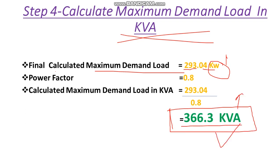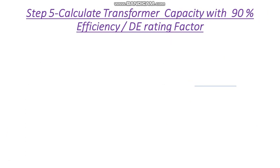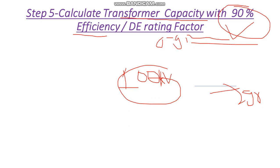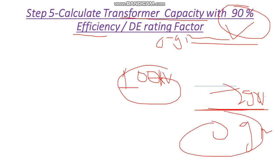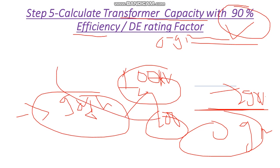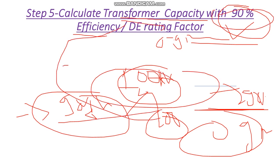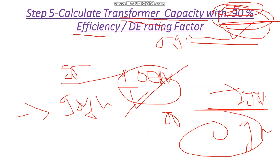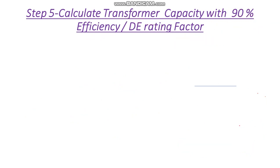In Step 5 we calculate the transformer capacity with 90% efficiency, or a derating factor of 0.9. This means that for a 100 kVA transformer with 90% efficiency, we should only connect up to 90 kVA of load. If we connect more than 90 kVA — say 95 kVA — the transformer would be overloaded and would not operate at its efficiency level. That's why we must select the transformer size considering this 90% efficiency.